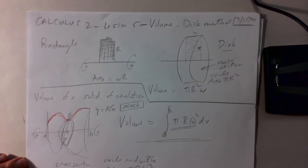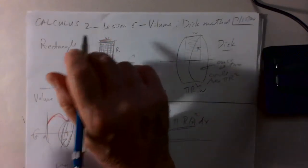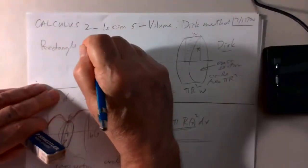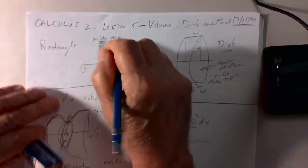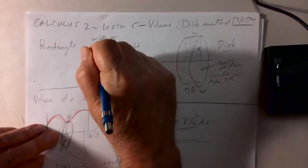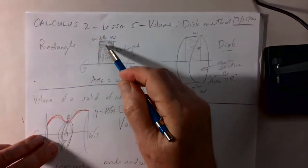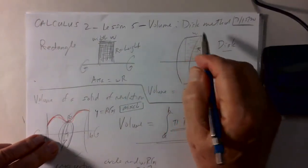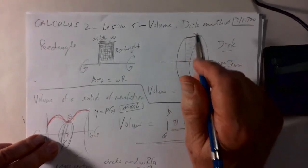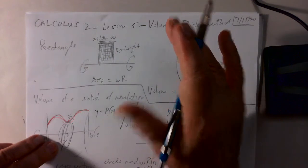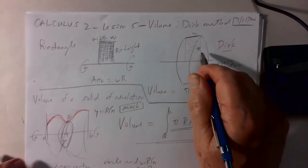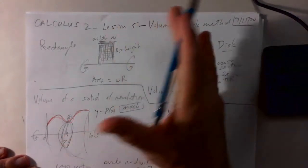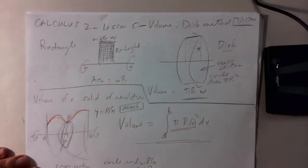Here's the simplest example of a solid of revolution. Take a rectangle with width W and height R. If you rotate this rectangle around the x-axis, it sweeps out a disc. The width of the disc is still W, and the cross-section is a circle of radius R. The area of that circle is π R², so the volume of the disc is π R² W.